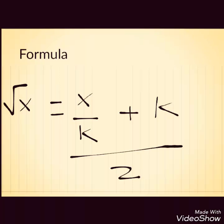Square root of x, where x is the number whose square root we have to find, can be found by x divided by k plus k all divided by 2. Here k is the nearest perfect square root which we have calculated previously.